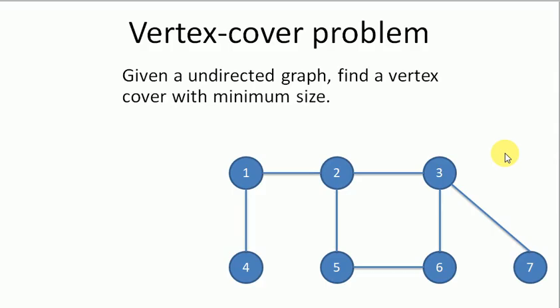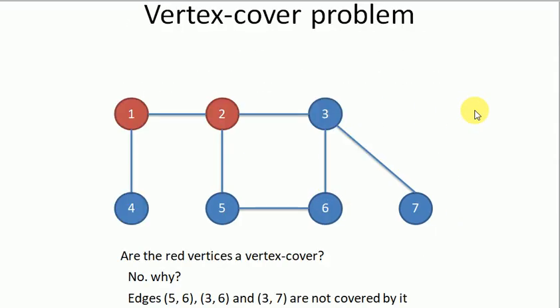Here is a problem for the vertex cover. Given an undirected graph, we have to find the vertex cover with the minimum size. In the graph we can see that there are 7 vertices and 7 edges. Let's start by finding it.